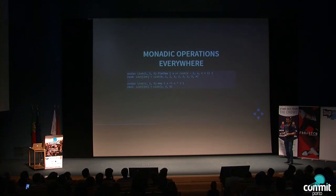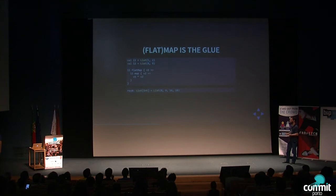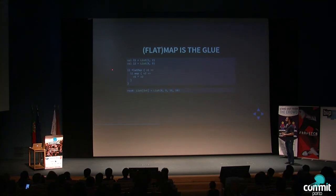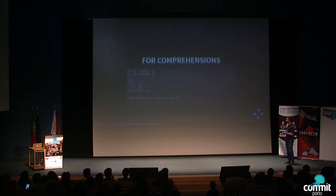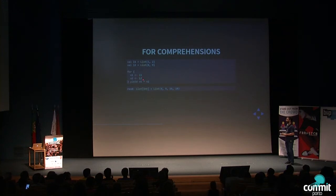What you have to retain is that flatMap and map are the glue to all things. For example, if I want pairwise multiplication of two lists, I can implement it using flatMap over one list and map over another. This is so common that Scala has syntactic sugar for it: for comprehensions. This code using a for comprehension is exactly the same as the flatMap/map version and has exactly the same results.